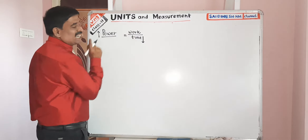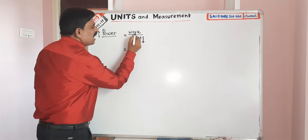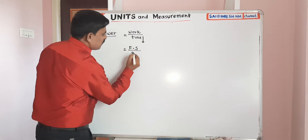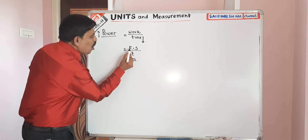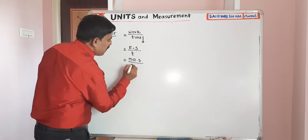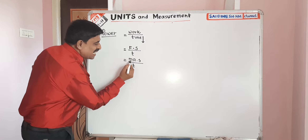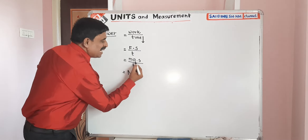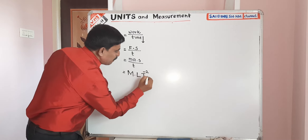Power is equal to work done divided by time. Work is a physical quantity. Work means force into displacement divided by time taken. Force means mass into acceleration. Mass is the fundamental quantity; its dimensional formula is capital M. Acceleration has dimensional formula L T to the power minus 2.